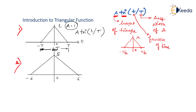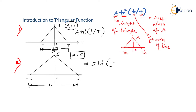I request you to pause the video and write a mathematical expression for the second sample triangle. For the second triangle, the height is 5 and the total base width is 12, so A=5 and total width=12. Half width becomes 6, so I can write this as 5·tri(t/6). This is how we express a triangular function.